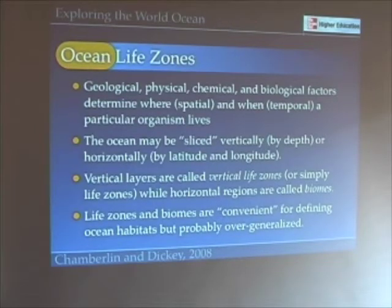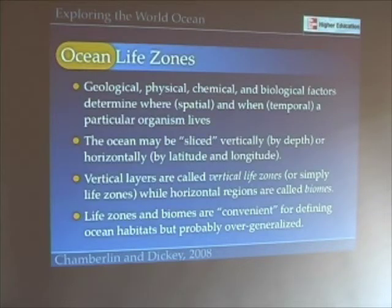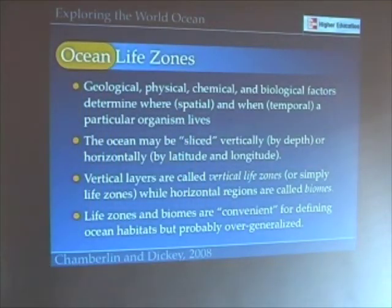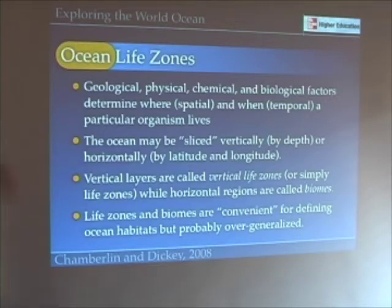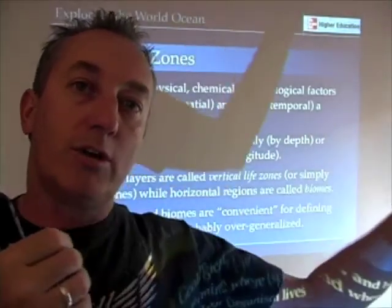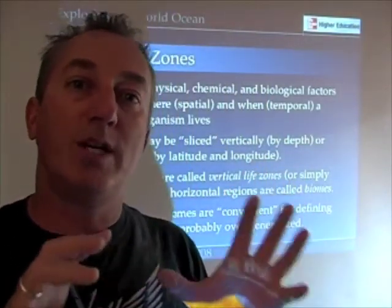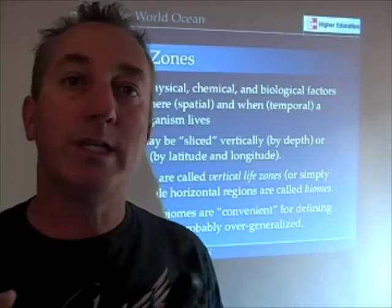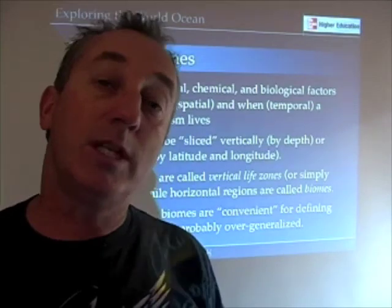The ocean may be sliced vertically by different zones of depth, or organized horizontally by latitude, such as temperate, tropical, or polar regions. Habitats exist along the surface and through the depth of the ocean. These vertical layers are called vertical life zones or ocean life zones. Along horizontal scales from the equator towards the poles, we also have very defined habitats called biomes. Both vertical life zones and horizontal biomes are important determinants that define where marine organisms live.